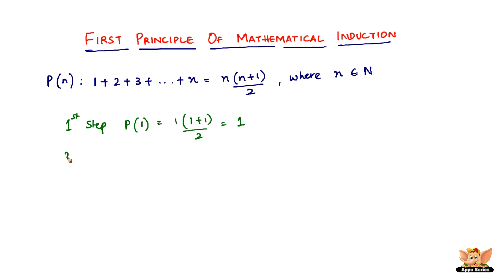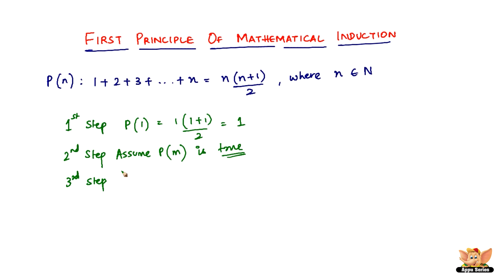Now what we have to do in the next step — that is the second step — is assume that P of m is true. Just the way P of 1 was true, we assume m is also going to be true. Then the third step is the induction step, which is the most important step. If m is true, P of m plus 1 should be proven true.